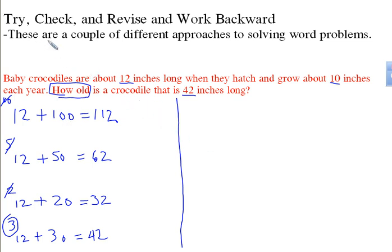The second way is work backwards. If you think about it, the crocodile is 42 inches long, so we've got a 42 inch long crocodile. We know it grows 10 inches each year. We're trying to eventually get down to 12.